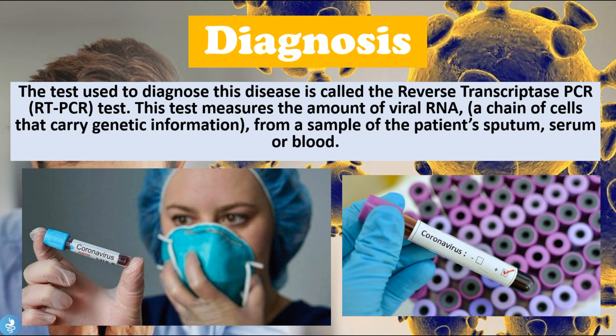How does one diagnose the coronavirus? The test used is called the Reverse Transcriptase PCR, or RT-PCR test. This test measures the amount of viral RNA — a chain of genetic material — from a sample of the patient's sputum, serum, or blood. Because this virus is an RNA virus, we can use a polymerase chain reaction test to detect small amounts of viral RNA and determine whether the patient is positive or negative for the coronavirus.